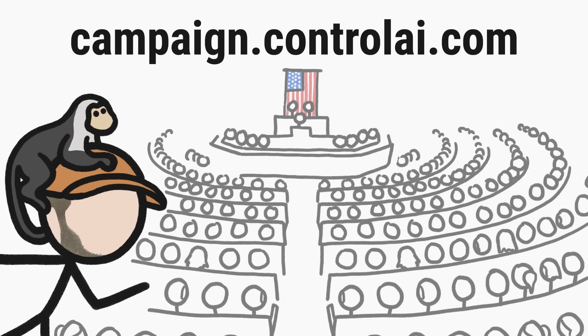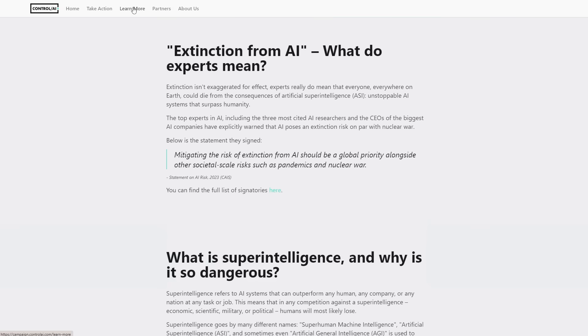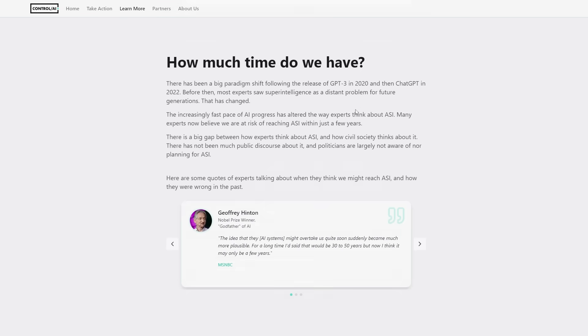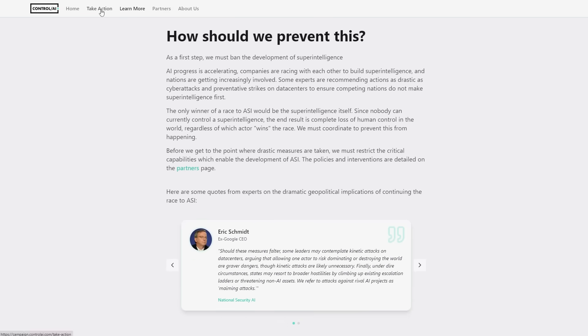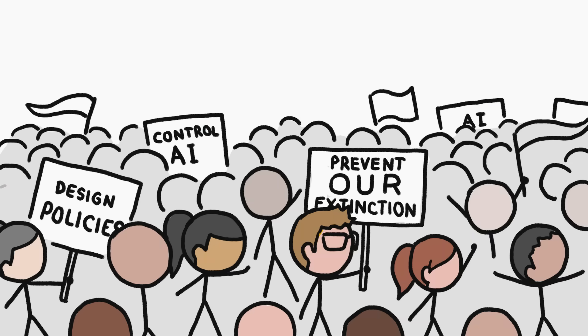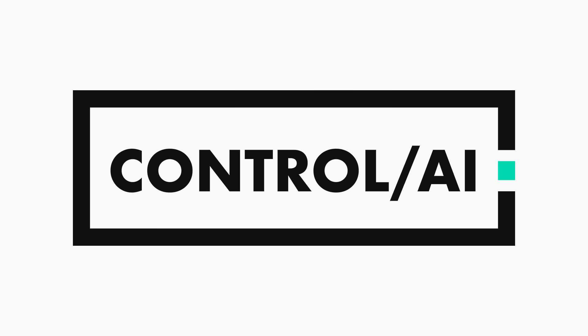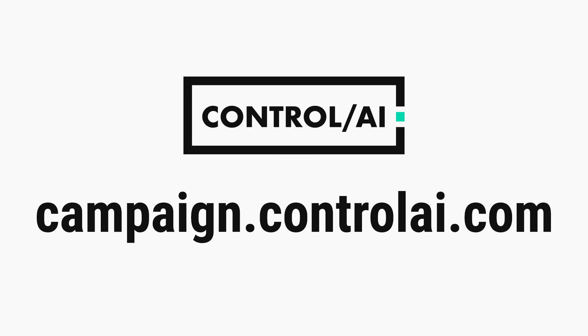check out campaign.controlai.com. There, the experts at Control AI, which sponsored this video, have put together really helpful educational resources about the risk of extinction from super intelligence, as well as simple and powerful ways to get more involved. Control AI has already mobilized tens of thousands of people to take action on this issue. In just the last few months, they've sent over 50,000 messages to lawmakers. They're building the movement to keep humanity in control. Go to campaign.controlai.com to help secure our future.